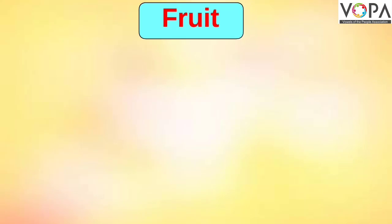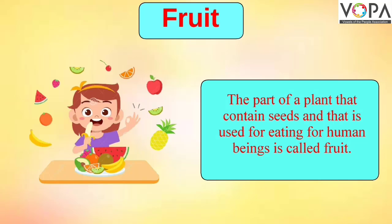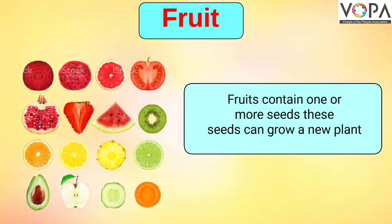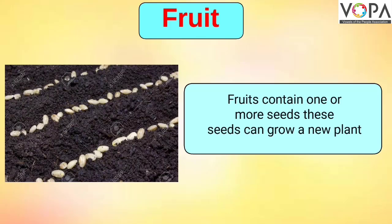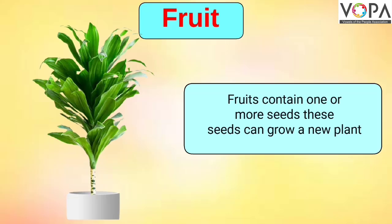The last part of the plant is fruit. The part of a plant or tree that contains seeds and is used for eating by human beings is called fruit. Fruits have different shapes, sizes, and colors. Fruits contain one or many seeds, and these seeds can grow a new plant. Hence, fruits are also responsible for growing a new plant.